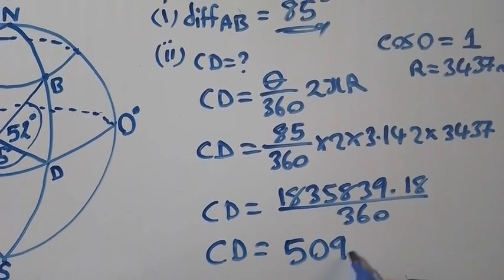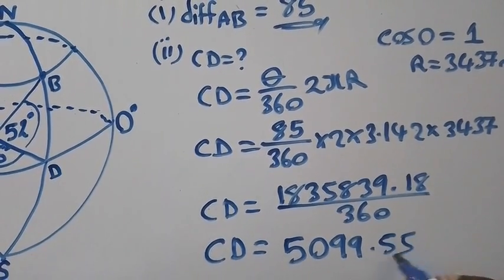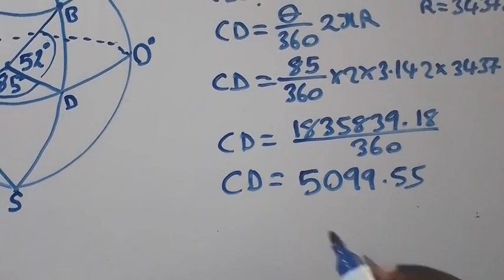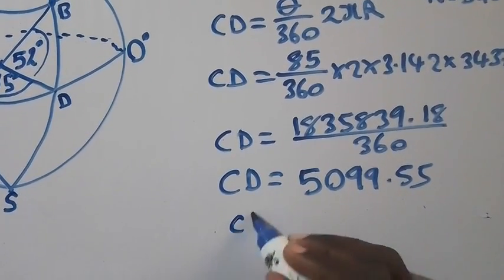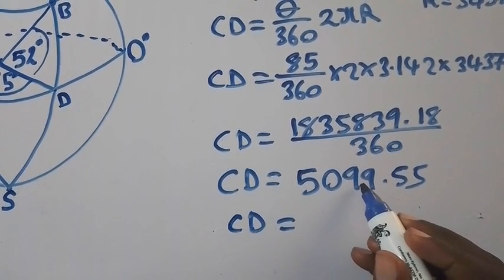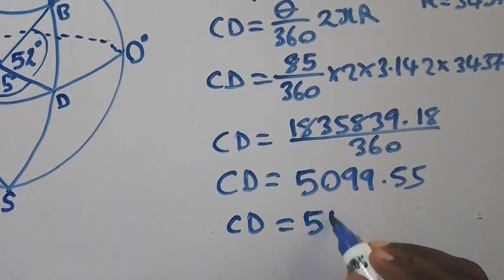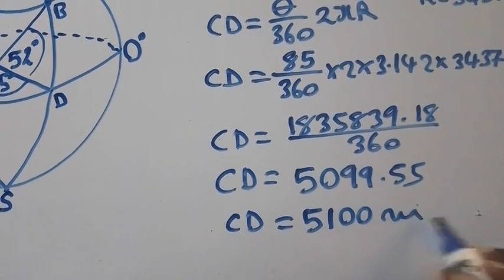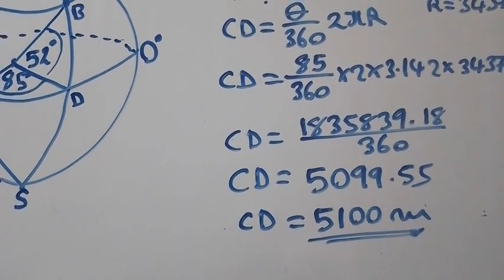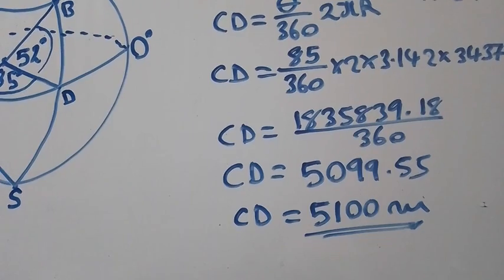So now if we divide 360 into 1 million, 835 thousand, 839.18, we are getting 5,099.55. So now if we round off this figure to 3 significant figures, 1, 2, 3, it will become 10 which will take 1 to the previous number, so we are going to have 5,100 nautical miles. So this is how you should find distance CD.